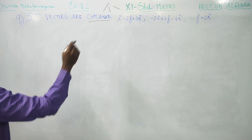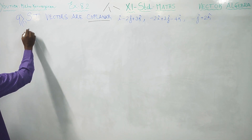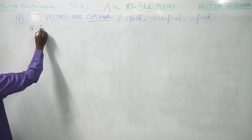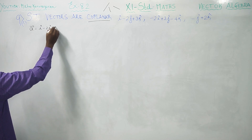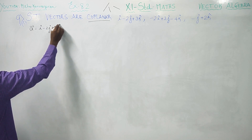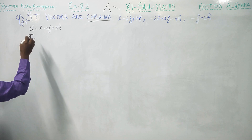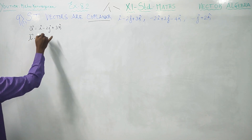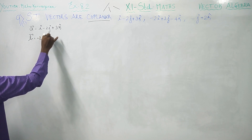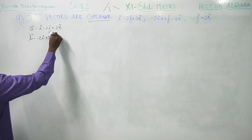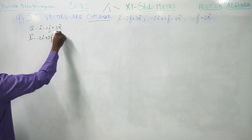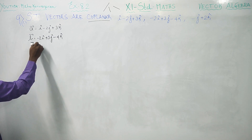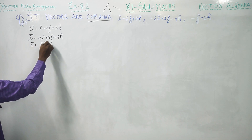To prove this, let us define the vectors. Vector a equals i minus 2j plus 3k. Vector b equals minus 2i plus 3j minus 4k. Vector c equals minus j plus 2k.